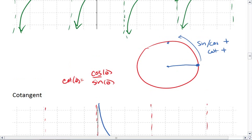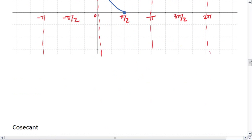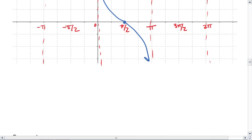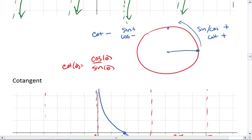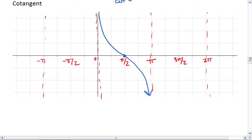Then we move into this other quadrant where sine is positive but cosine is negative, making cotangent negative. So we dip down to negative infinity. We move into the third quadrant where sine and cosine are both negative, and that makes cotangent positive. And the pattern repeats.